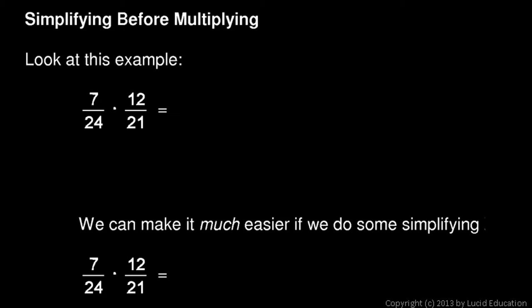All right, we're still talking about multiplying fractions, and I'm going to make the point here that simplifying the fractions before you multiply can save a lot of time and effort. So look at this example, 7 over 24 times 12 over 21.